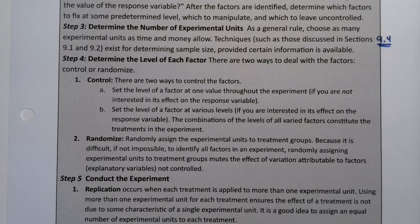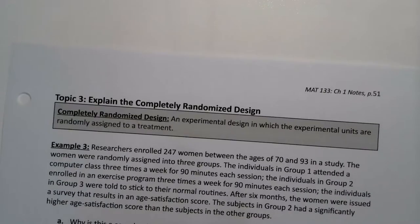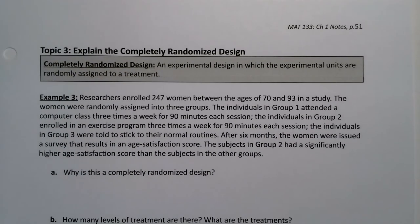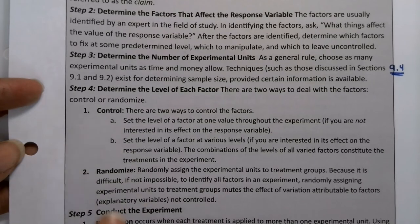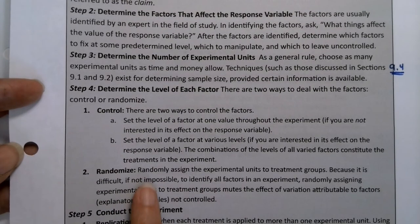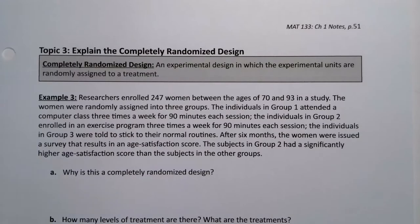All right. Now let's talk about the designs of an experiment. There are three types that we're going to look at. The first type is a completely randomized design. So this is one of the things that we look at when you look at how are you going to set this up. How are you going to set up your randomization? How are you going to set up your control groups? So that's what we're kind of analyzing is the three of the different ways that you can do that. So a completely randomized design is an experimental design in which the experimental units are randomly assigned to a treatment.